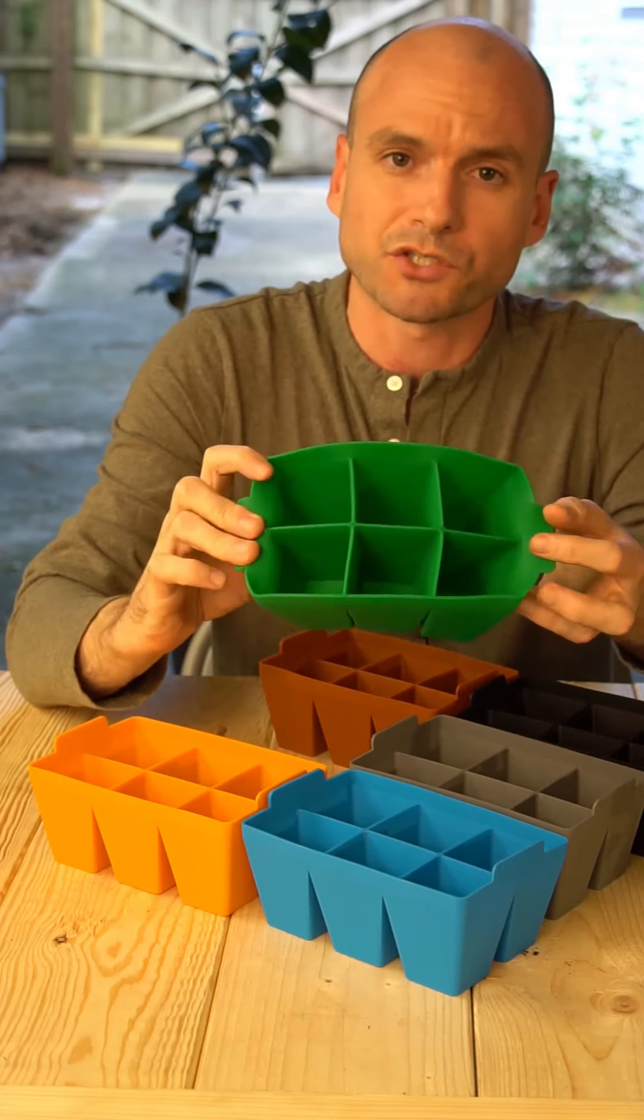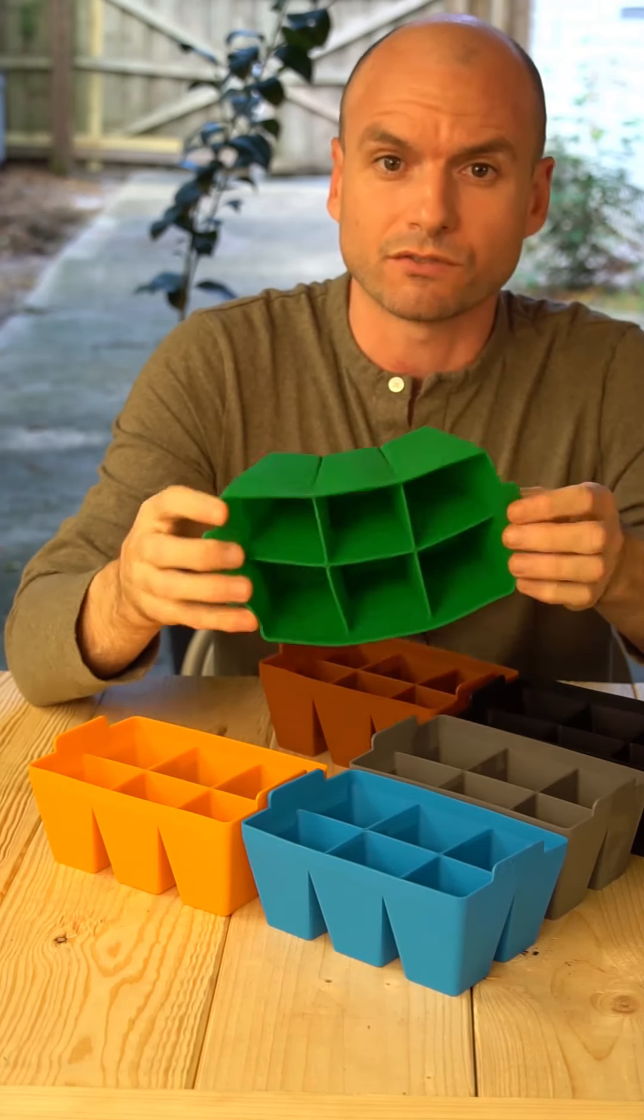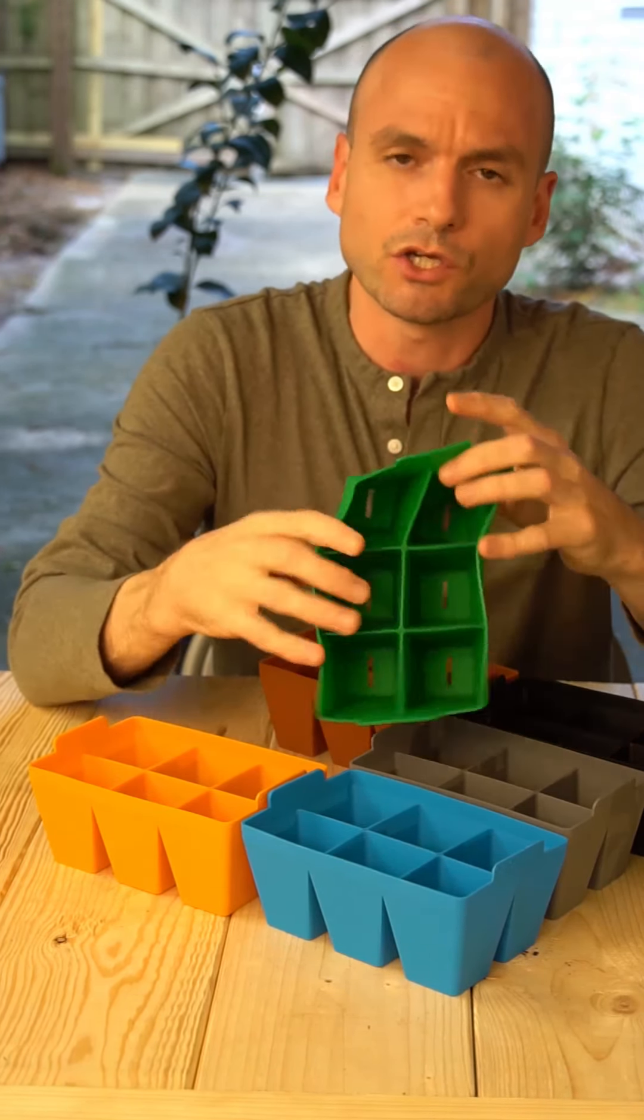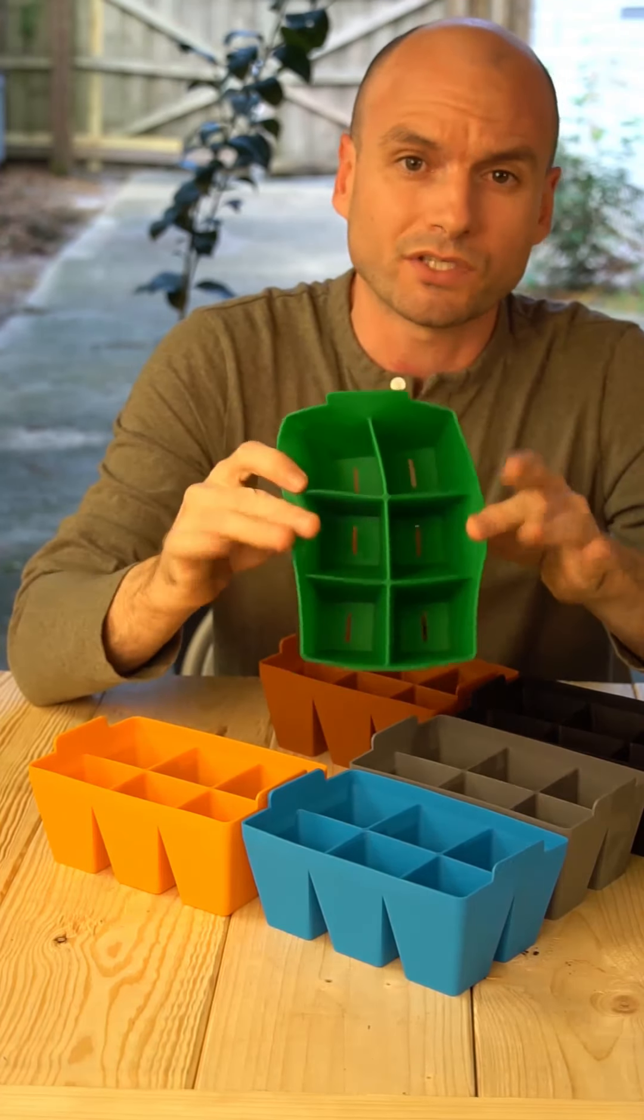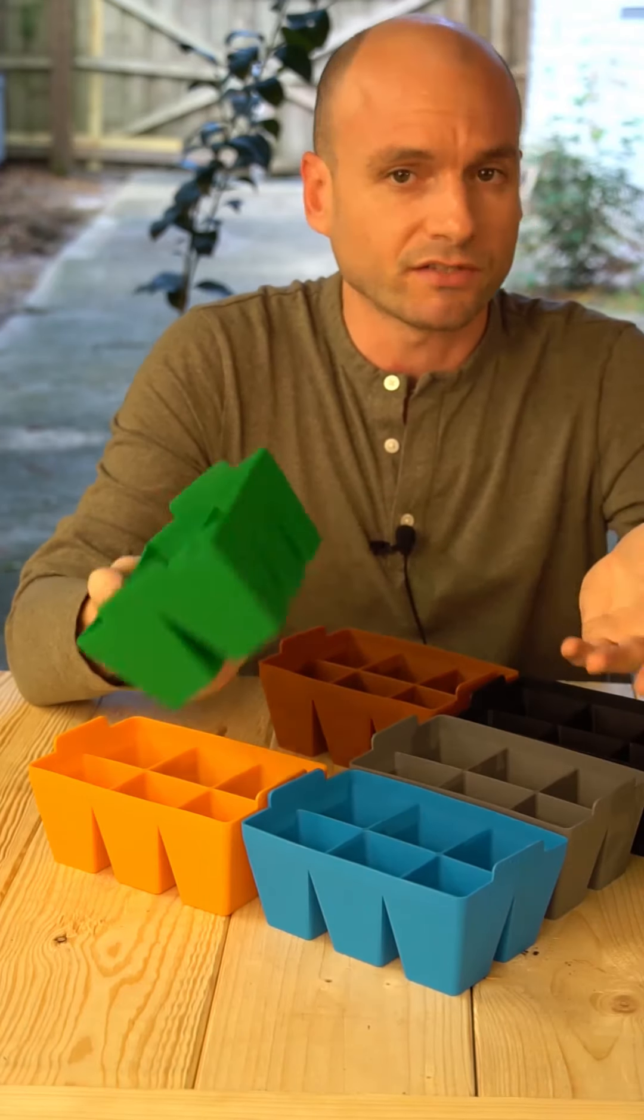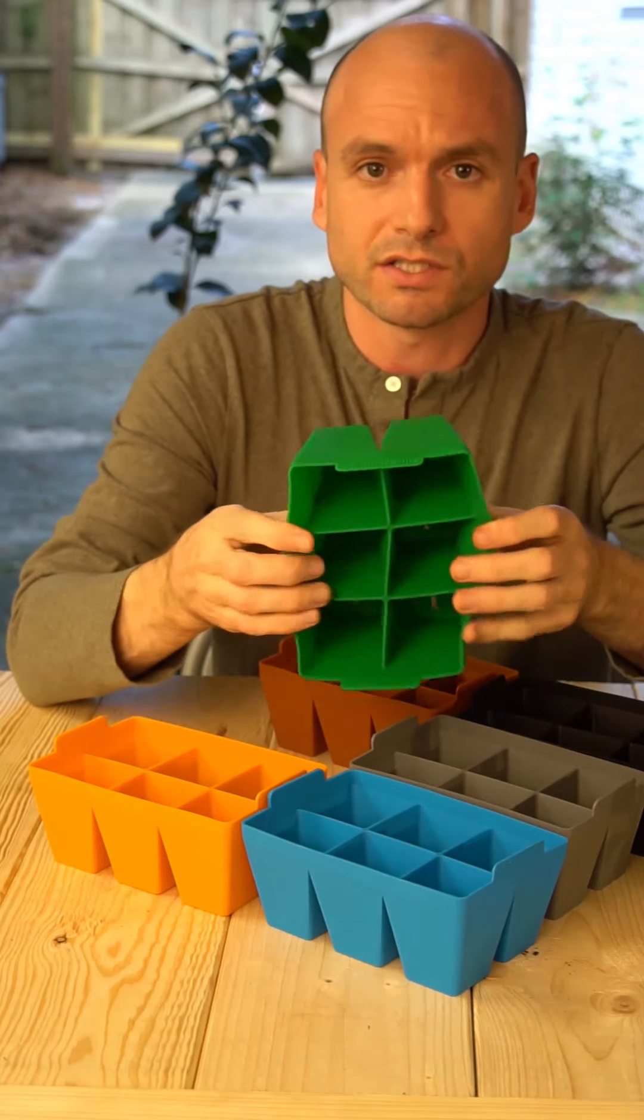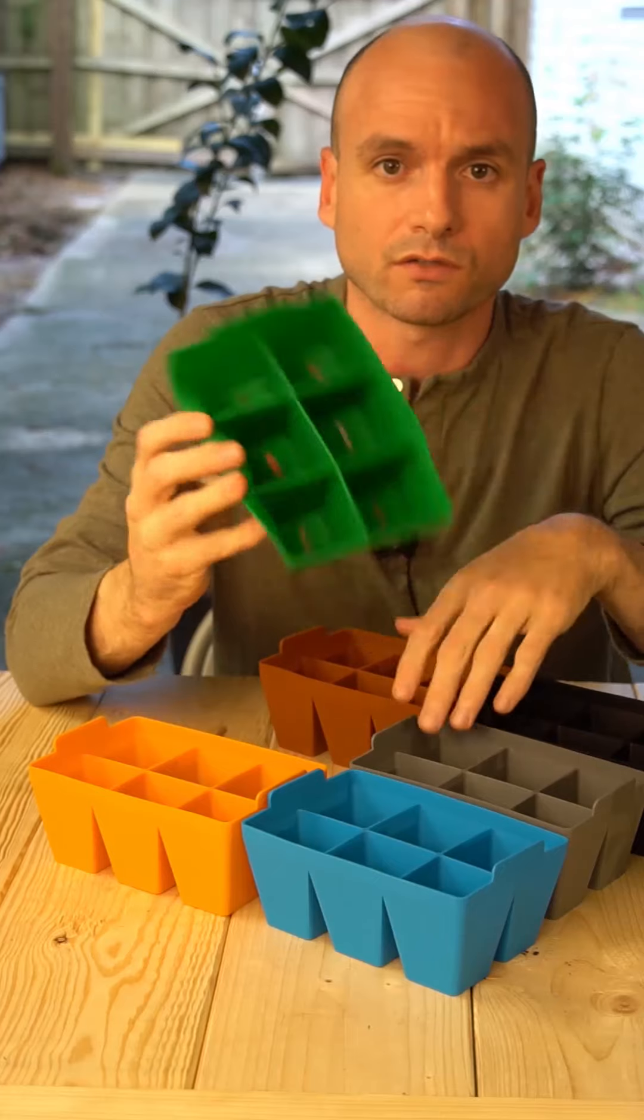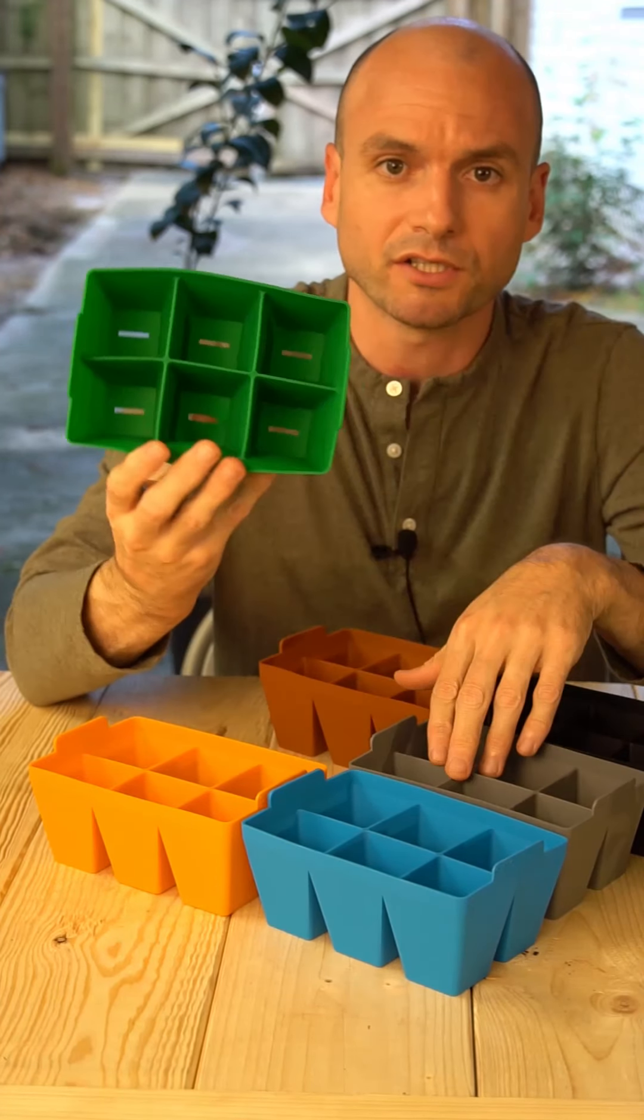If you ever have some sort of infectious agent in your garden and you needed to sanitize your trays you can do these without using any harsh chemicals. All you need is a dishwasher and put it on sanitized mode or you can simply put them in some boiling water for a few minutes and they'll be completely sanitized.